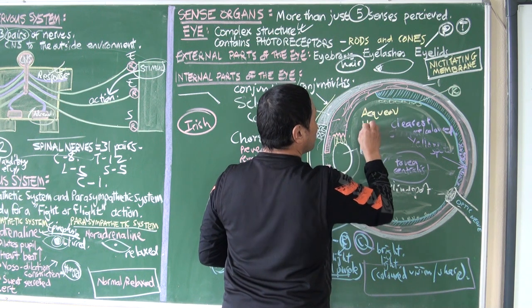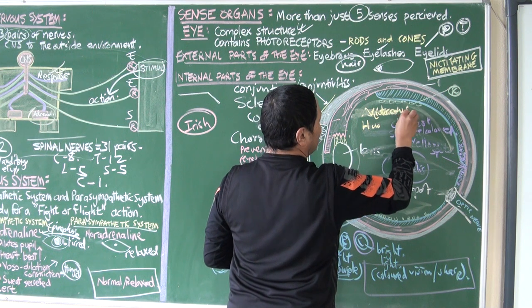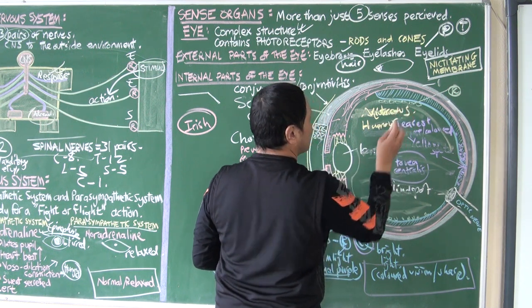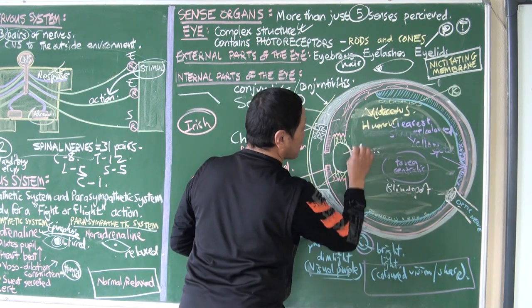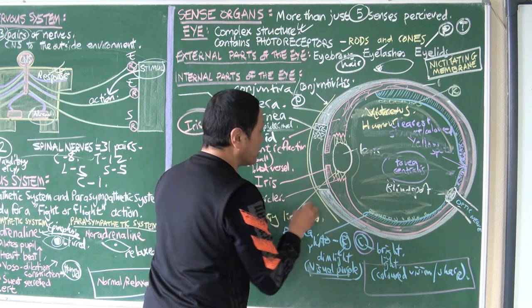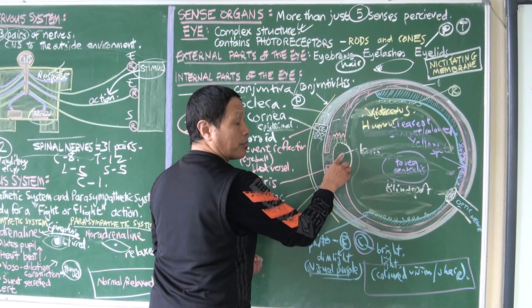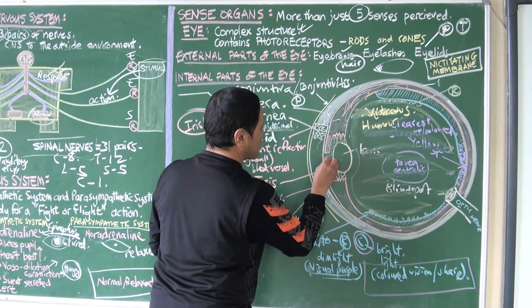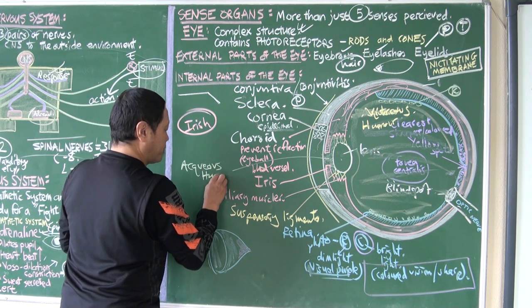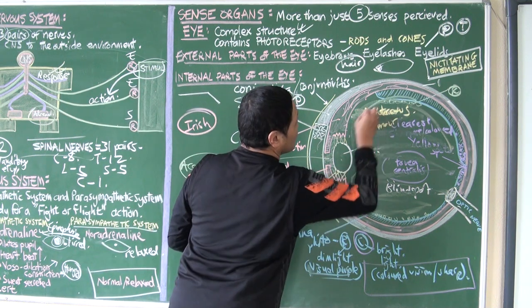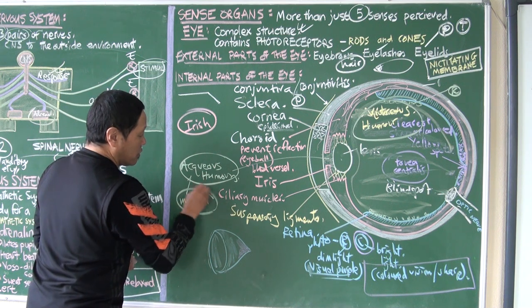This whole thing, this part is covered by a fluid known as vitreous humor, which covers this part. And aqueous humor is present here, after cornea and before or ahead in front of lens. This is the aqueous humor.